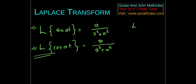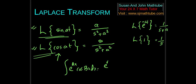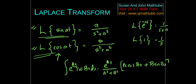So in total we have five formulae now. First: Laplace of e to the power at is 1 by s minus a. Then, if it is minus at, it's 1 by s plus a. Laplace of 1, since 1 is e power 0 times t, gives 1 by s. We derived Laplace of sin at. You can try Laplace of cos at yourself using the formula: integral of e to the power ax cos bx dx equals e to the power ax divided by a squared plus b squared, times a cos bx plus b sin bx, plus C.